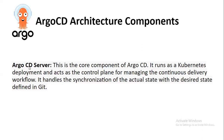The ArgoCD Server is the core component of ArgoCD. It runs as a Kubernetes deployment and acts as the control plane for managing the continuous delivery workflow. It handles the synchronization of actual state with the desired state as defined in git.